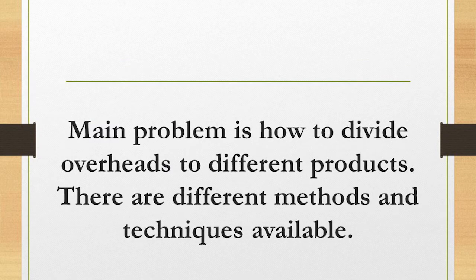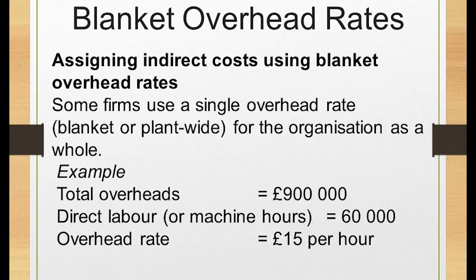Our main problem is overheads, and today we are looking at absorption costing. A blanket overhead rate means one factory uses one overhead rate for all different products. The actual cost differs based on how long it takes to manufacture them, but the base rate is the same. We take our total overheads, divide by our activity — direct labor hours or machine hours — and get our overhead rate, which is £15 per hour in this case.